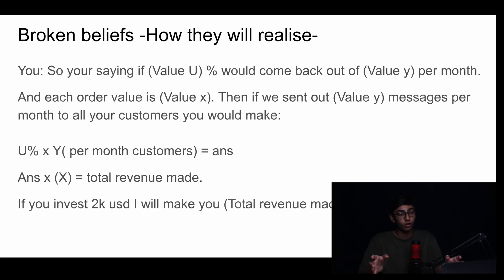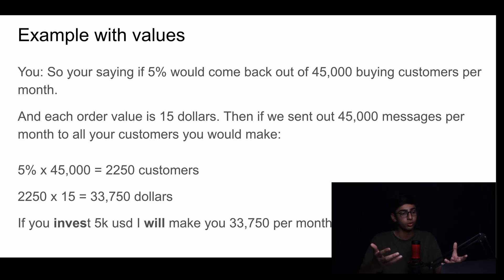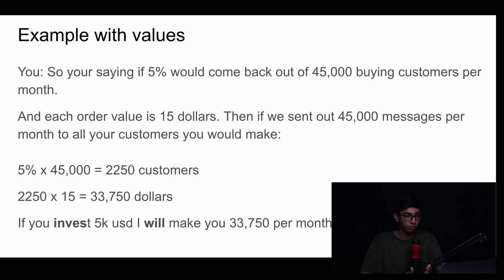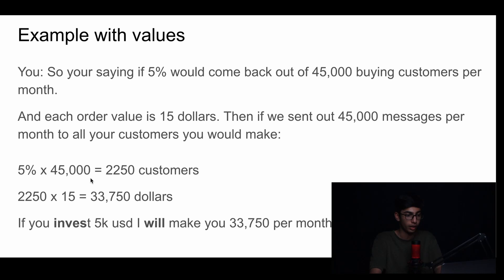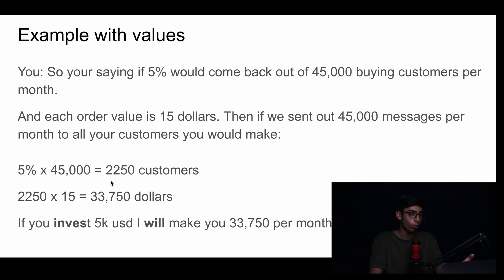Let's put in actual values. You would say: 'So you're saying if 5% would come back out of 45,000 buying customers per month, and each order value is $15, then if we sent out 45,000 messages to all your customers, you would make...' — then you do the calculations. 5% of 45,000 customers equals 2,250 customers coming back. Multiply 2,250 by $15 order value, and the total revenue made is $33,750. You could go up to them and say: 'If you invest $5k, I will make you $33,750 per month.'